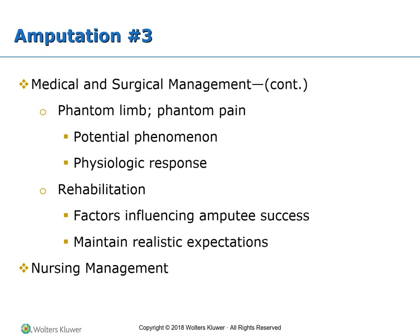Rehabilitation: The success of the amputee's rehabilitation depends on variables such as age, type of amputation, condition of the stump, physical status, condition of the remaining limb, concurrent debilitating illness, visual and motor coordination, motivation, and cooperation. Clients vary greatly in their learning capability and ability to master the use of the prosthesis. The period allotted for training also varies with each client.